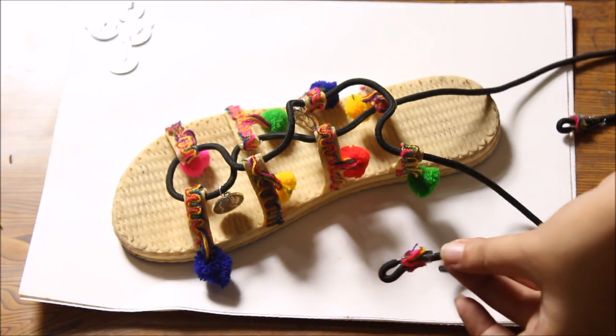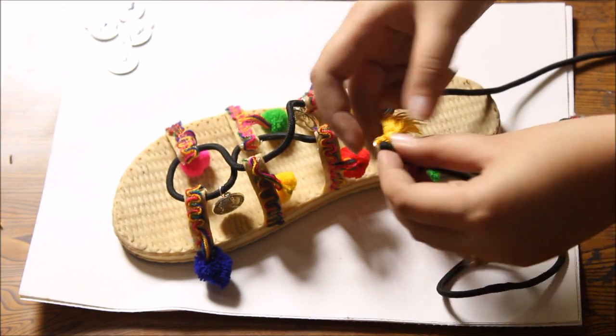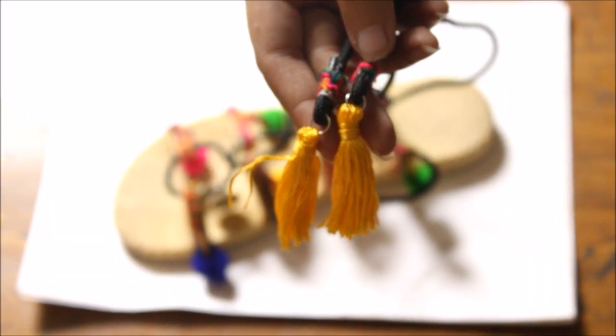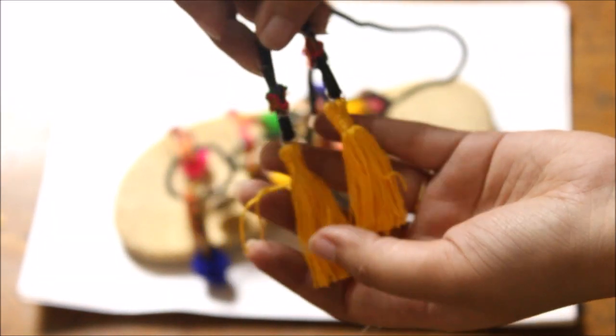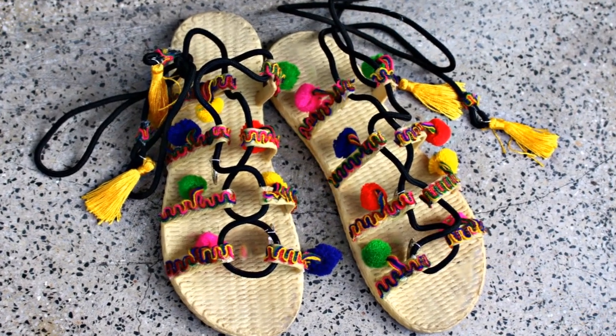I am going to make a loop at the end of each string and then attach a tassel to each loop with the help of jump rings.